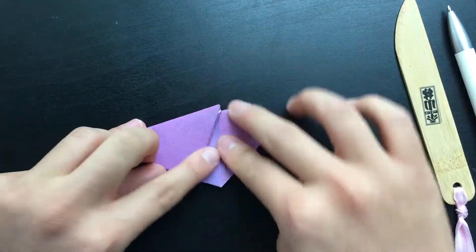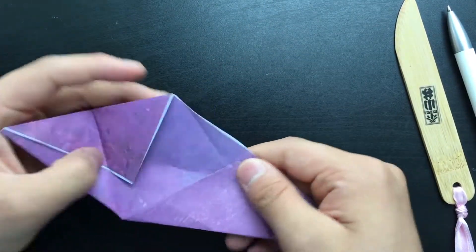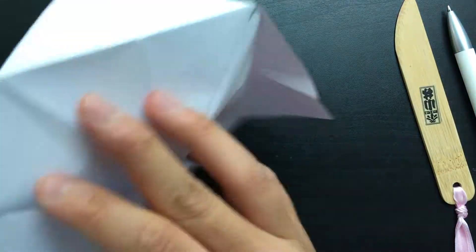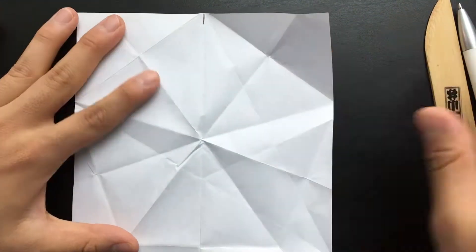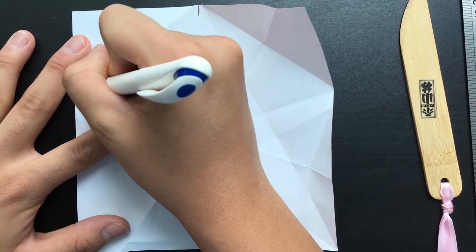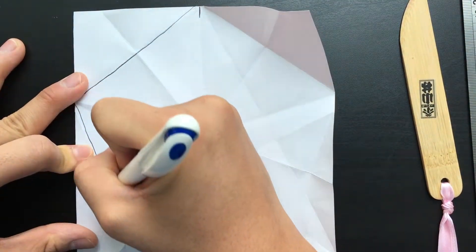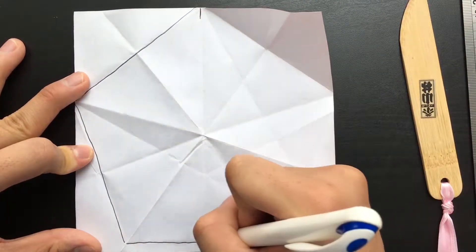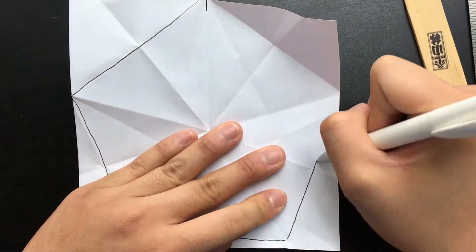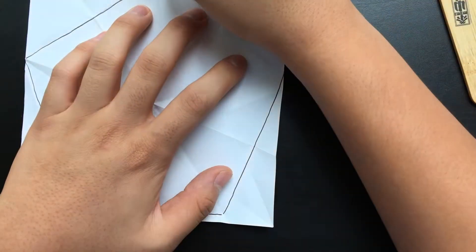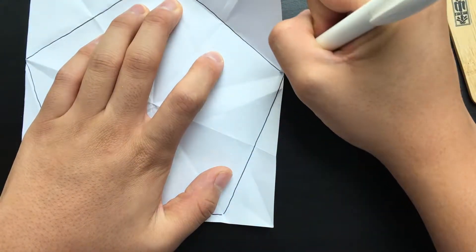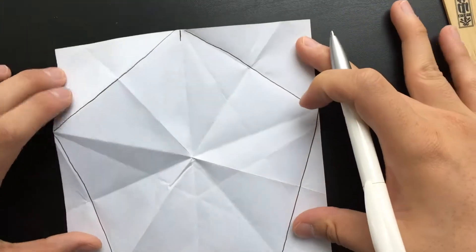And then, once you unfold everything, you'll have your regular pentagon. And I'm just going to crudely draw it out in the pen, just so that it's a bit clear for everyone to see. And that is how you make a regular pentagon out of a square using origami.